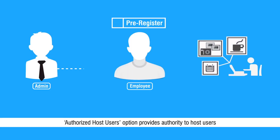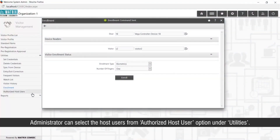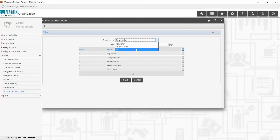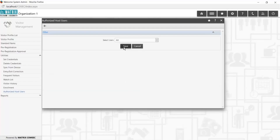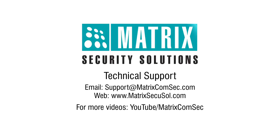The Authorized Host Users option provides authority to host users for pre-registration of a visitor. The administrator can select the host users from the Authorized Host User option under Utilities. Thank you for watching this video — for further queries, please contact the Matrix technical support team.